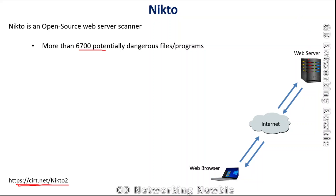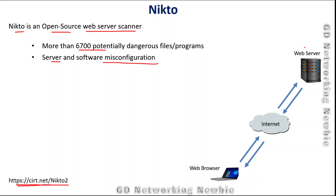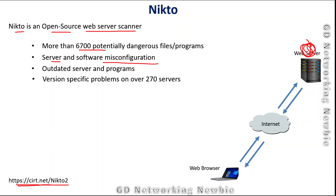Because some hackers can attack it, before that we try to find out if there is some weakness there. To find out that weakness, we have Nikto, which is open source and that's a web server scanner. In this way, we can actually find out server or software misconfiguration, which may be the reason for vulnerability in that web server. We can find out outdated server or programs installed, and also version-specific problems on over 270 servers.